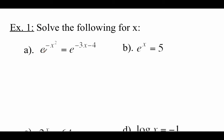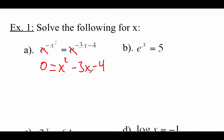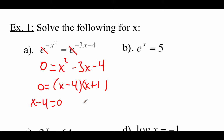Taking a look at this first example: we've got e raised to the negative x squared power equals e raised to the power of negative 3x minus 4. We've got exponentials on both sides each with a base of e, so this is a one-to-one property equation. Cross off those bases of e and focus on negative x squared and negative 3x minus 4. Now we have a quadratic equation, so we need zero on one side. Add the negative x squared over to get zero equals x squared minus 3x minus 4, which factors as (x minus 4)(x plus 1) equals zero. So x equals 4 and x equals negative 1.